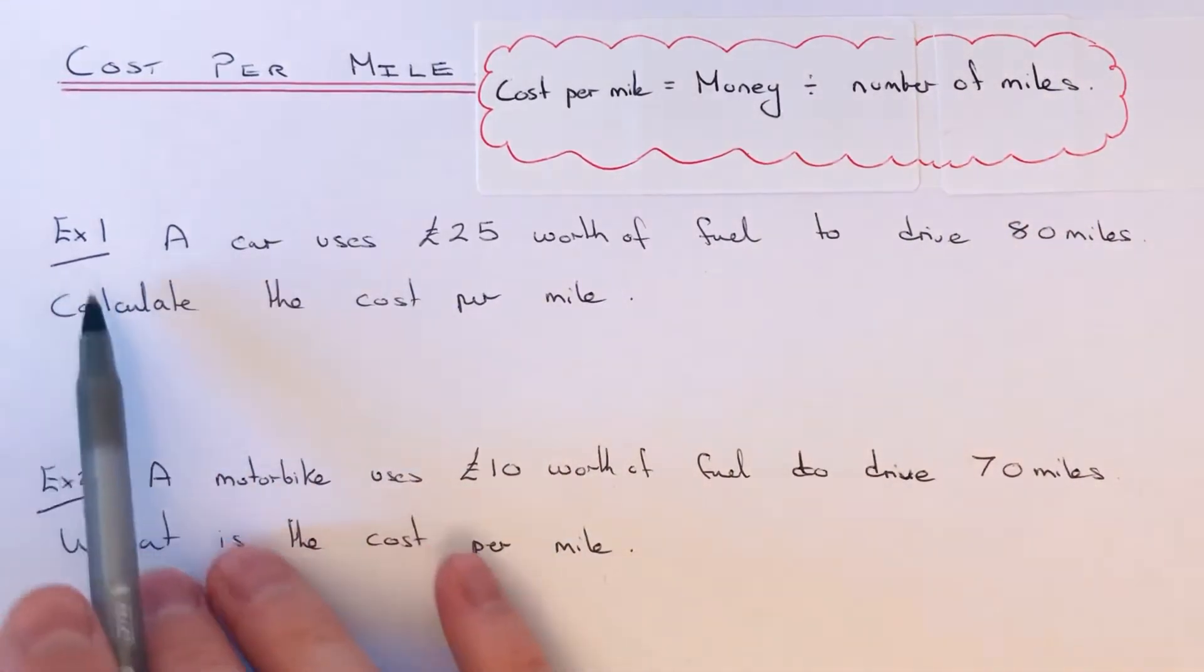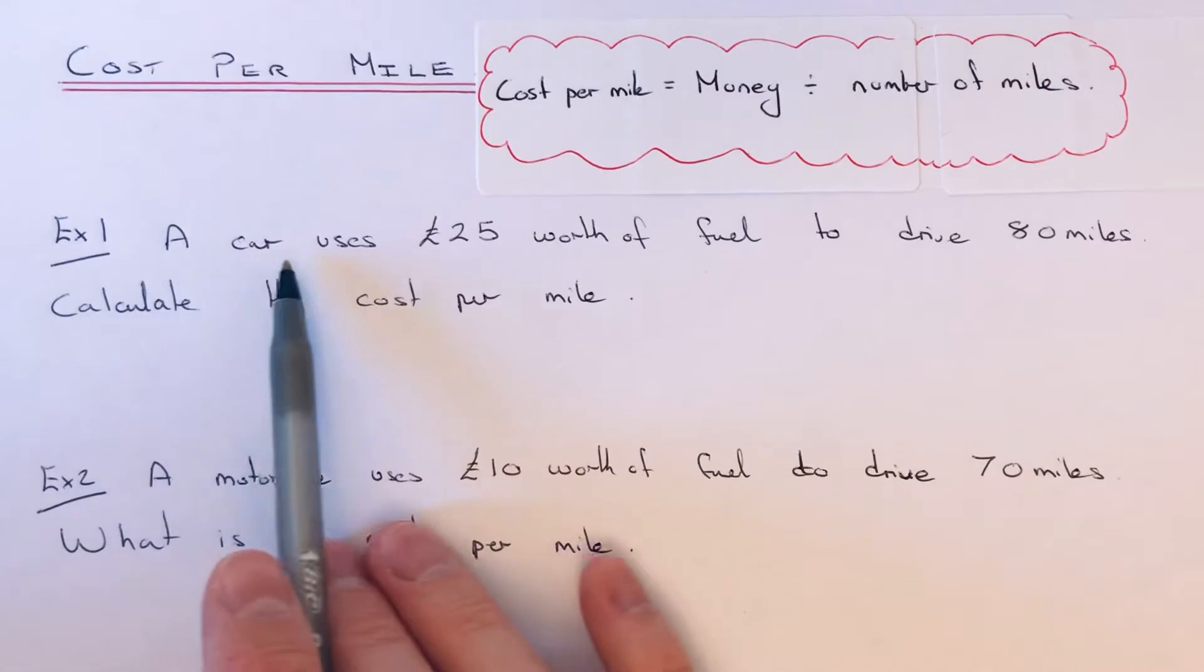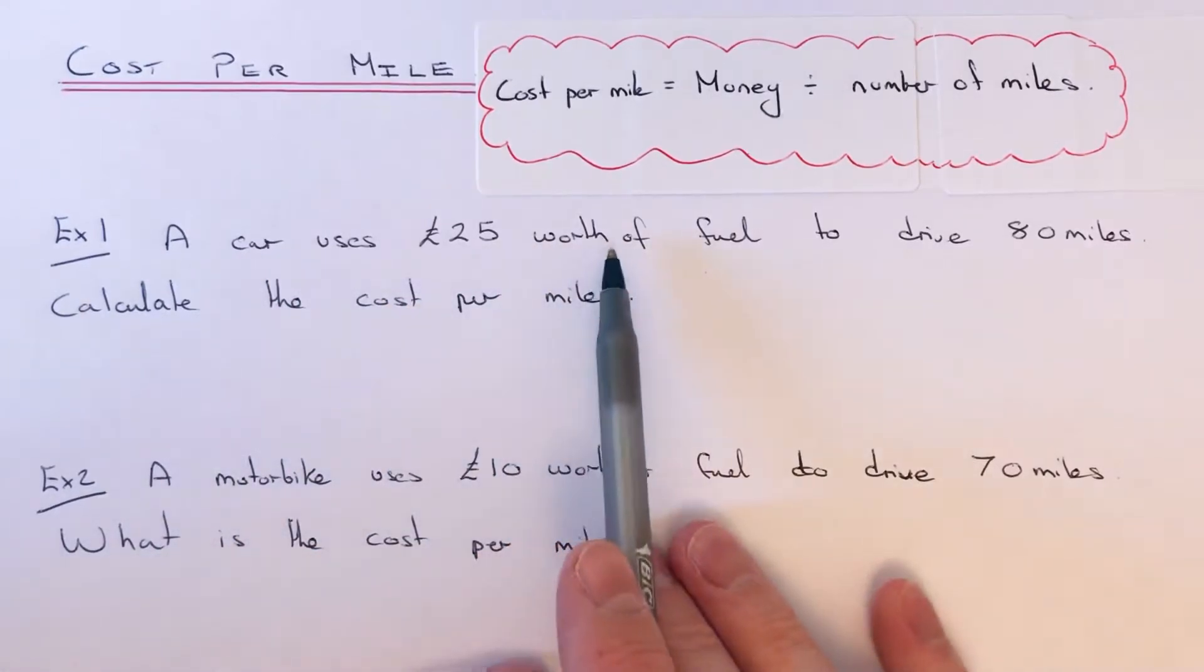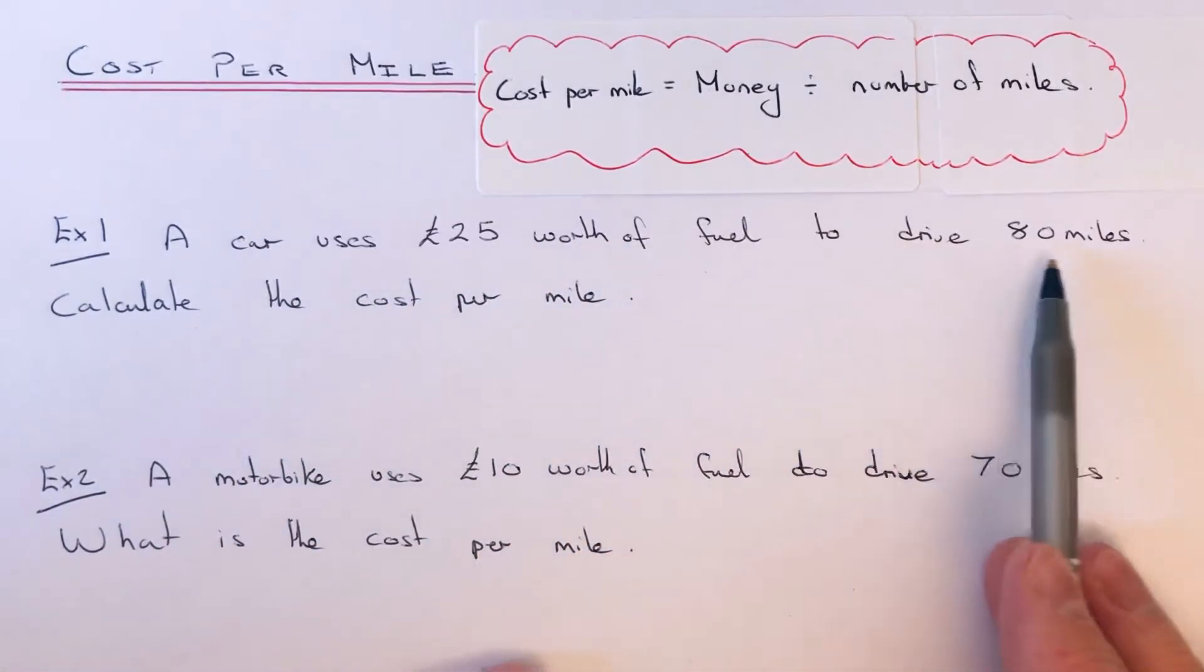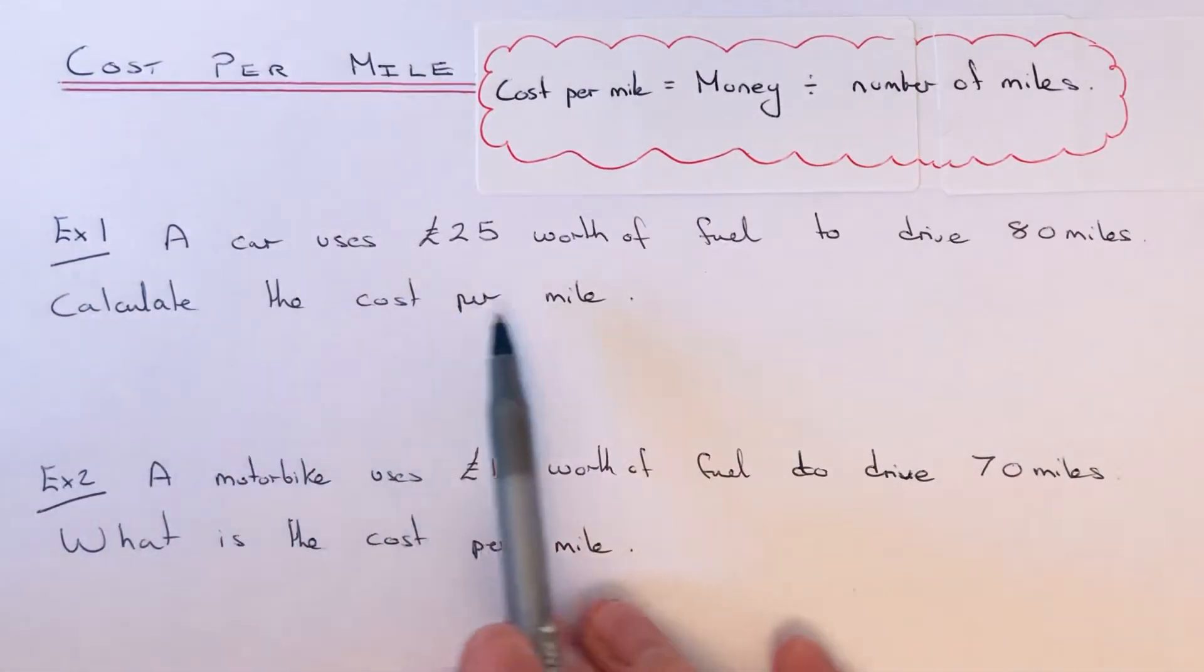Let's have a look at the two examples here. Example one: a car uses £25 worth of fuel to drive 80 miles. We've got to calculate the cost per mile.